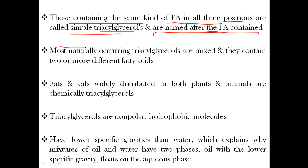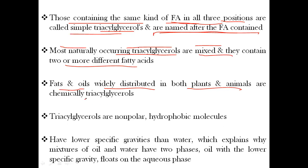Most naturally occurring triacylglycerols are mixed and contain two or more different types of fatty acids, although some simple triacylglycerols are also important. Fats and oils, which are widely distributed in plants and animals, are chemically triacylglycerols. Fats are solid at room temperature and oils are liquid at room temperature.